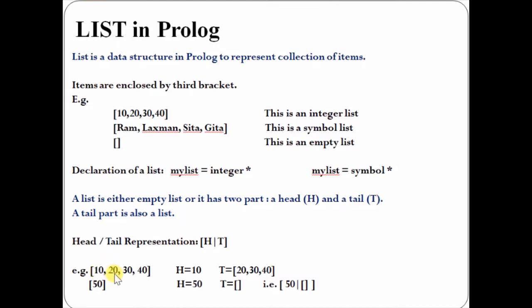For example, [10,20,30,40]. In this case, the head will be the first element, 10. The tail is the remaining part, [20,30,40].